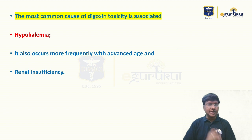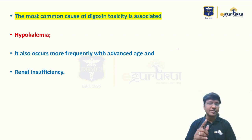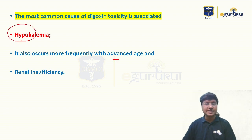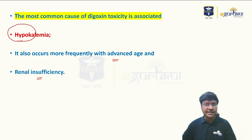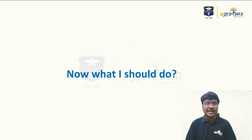Now that the individual has developed digoxin toxicity, you should know the predisposing factors. The most common predisposing factor is hypokalemia, followed by elderly age and renal insufficiency. In our patient, the predisposing factor is advanced age, as he is a 79-year-old male.